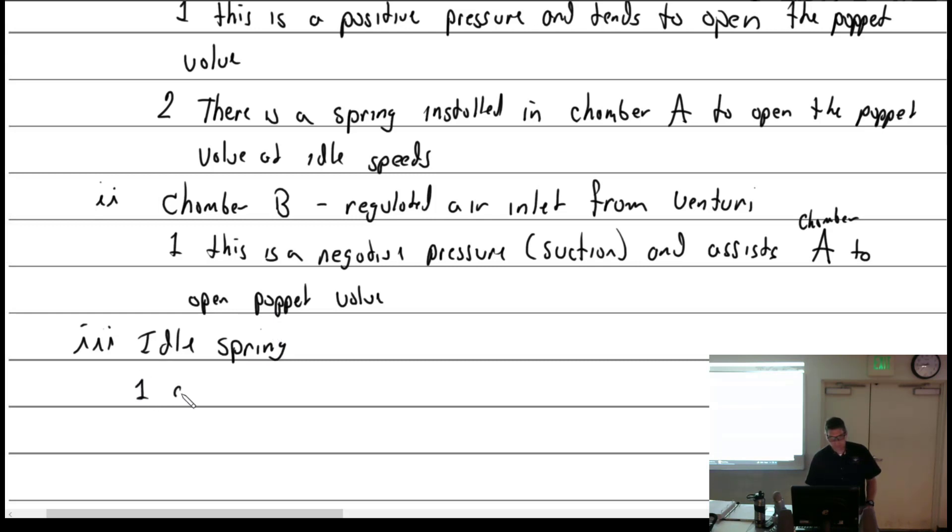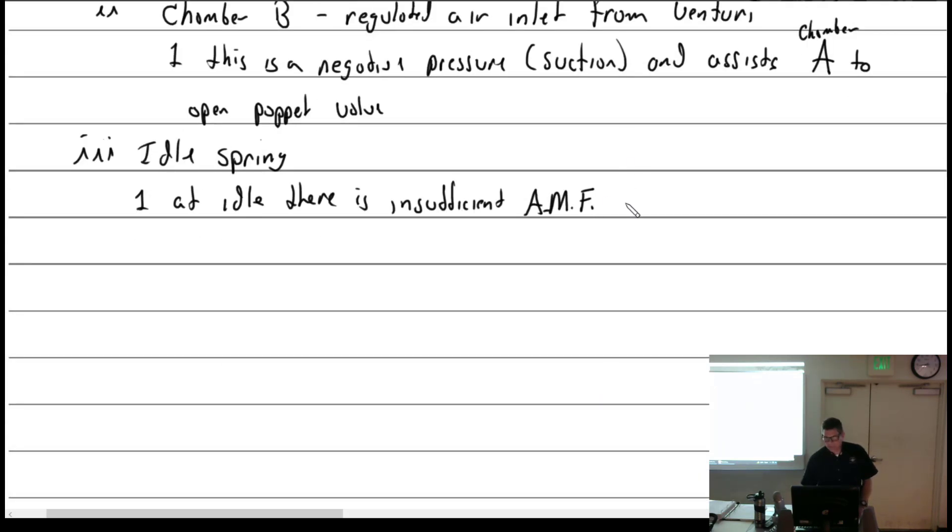At idle there is insufficient AMF, air metering force. So a spring is added to hold the poppet valve off its seat enough to get idle fuel.